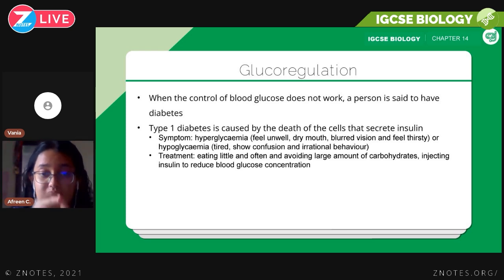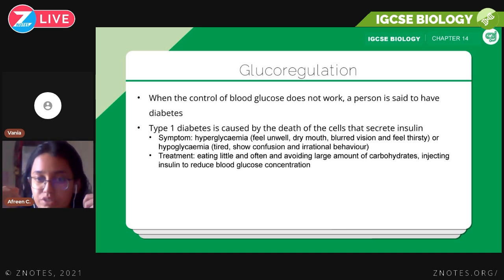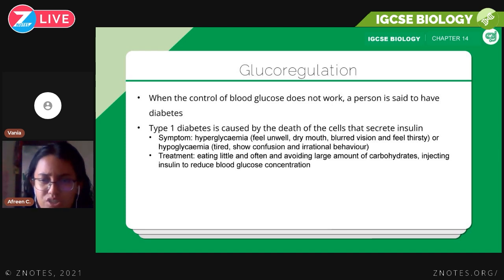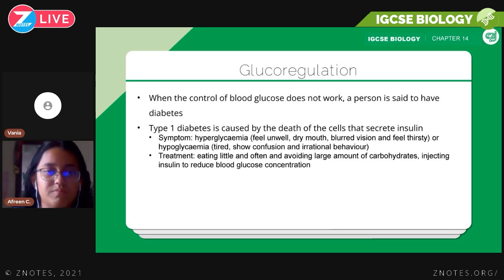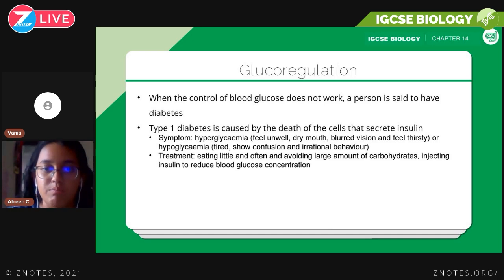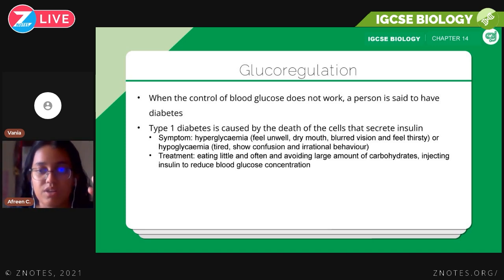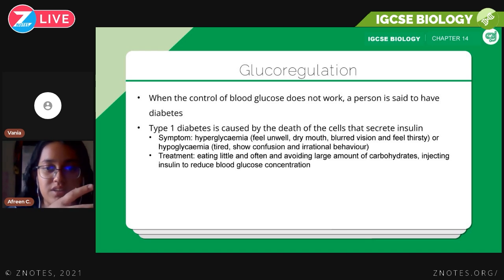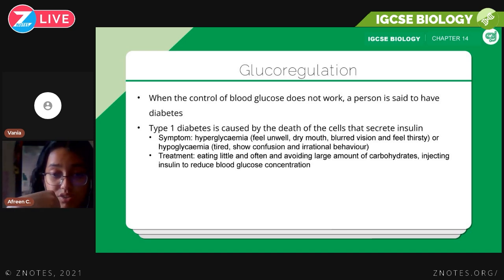The symptoms of type 1 diabetes include hyperglycemia — feeling unwell, constantly having a dry mouth, blurred vision, and feeling thirsty — or hypoglycemia, causing tiredness, confusion, and irrational behavior. The treatment includes eating little and often — rather than three big meals, have small meals frequently throughout the day — avoiding large amounts of carbohydrates at once. These patients often need to inject insulin into their bloodstream to reduce blood glucose concentrations.